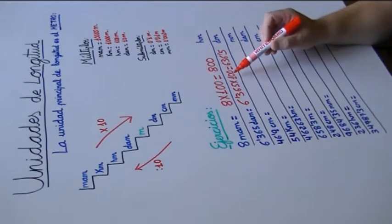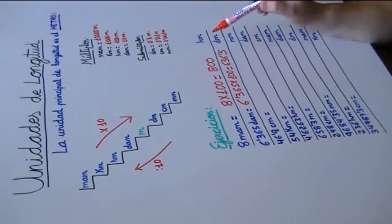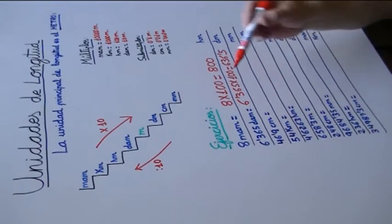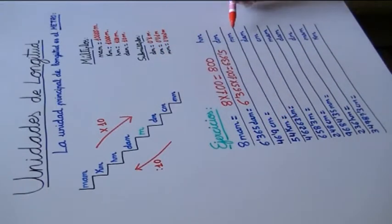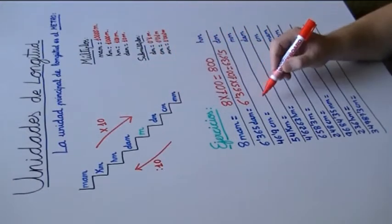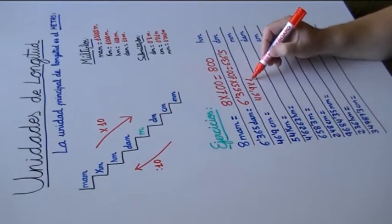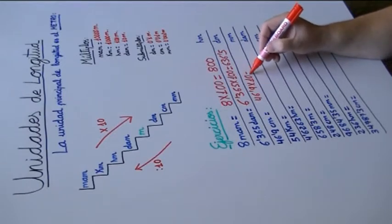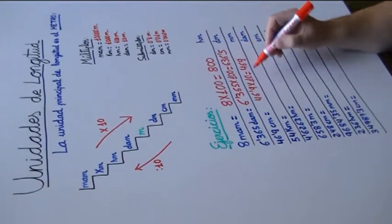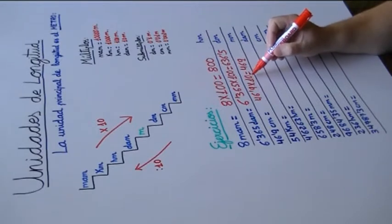Cuando multiplicamos por la unidad seguida de ceros y multiplicamos un número decimal, desplazamos la coma hacia la derecha. Si dividimos, hacia la izquierda. Seguimos. 46,9 centímetros a milímetros. ¿Cuántos escalones van? Uno nada más. Multiplicamos 46,9 por 10, que es igual a 469. Desplazamos la coma hacia la derecha una cifra, porque al 1 lo acompaña nada más que un cero.